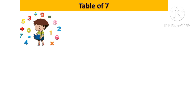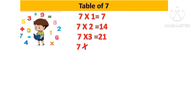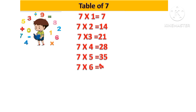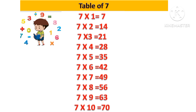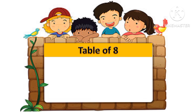Let's revise: 7 one's are 7, 7 two's are 14, 7 three's are 21, 7 four's are 28, 7 five's are 35, 7 six's are 42, 7 seven's are 49, 7 eight's are 56, 7 nine's are 63, 7 ten's are 70. Table of 8.